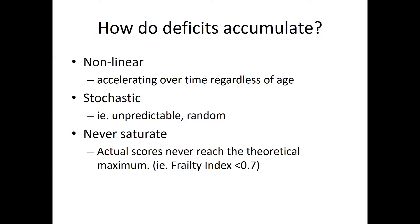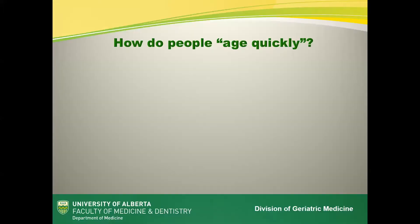Deficits accumulate with age in a non-linear, accelerating fashion. Regardless of age they are unpredictable and random — stochastic. They never saturate; it is impossible to acquire all 70. In fact, some people live with a frailty index score of 0.7. This introduces a paradox: a person who is more frail may also have characteristics that make them more resilient.